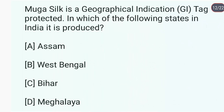Muga silk is a geographical indication tag protected in which of the following states in India? Ye Assam mein produce hota hai. Muga silk is a variety of wild silk geographically tagged to the state of Assam.